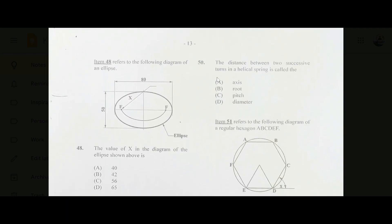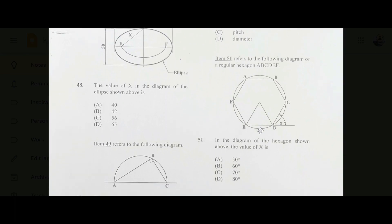Number fifty: the distance between two successive turns in a helical spring is called the pitch — answer C. Number fifty-one: in the diagram of the hexagon shown, the value of X is 60 degrees — answer B.